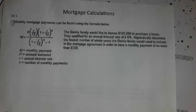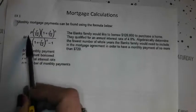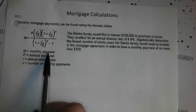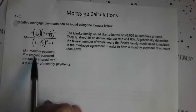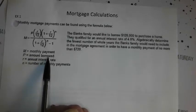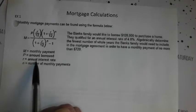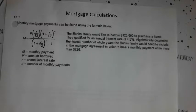Alright, so reading carefully here, monthly mortgage payments can be found using the formula below. Here it is. The capital M stands for monthly payment. The capital P stands for your amount borrowed. R is your annual interest rate. N is the number of monthly payments.